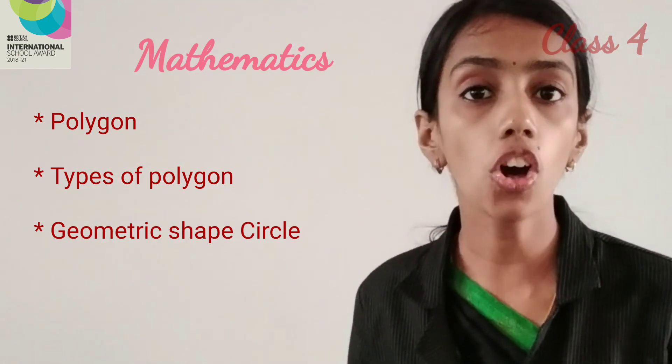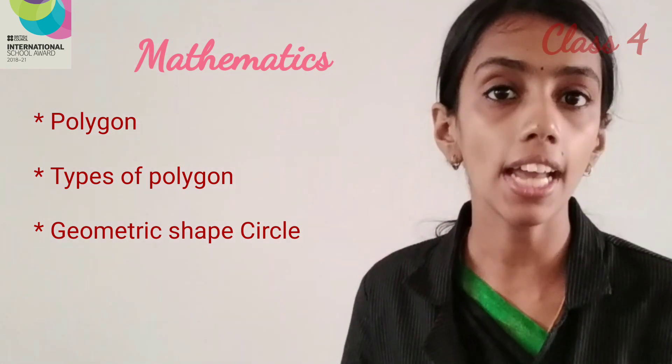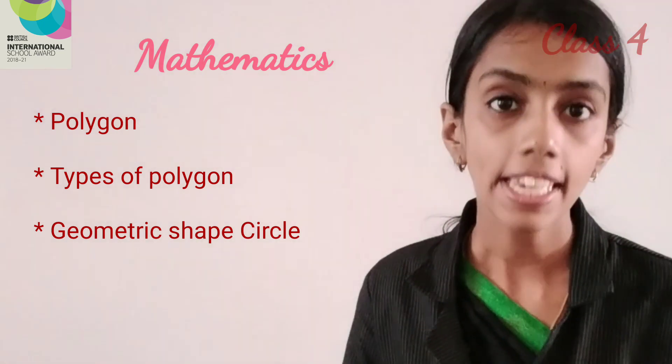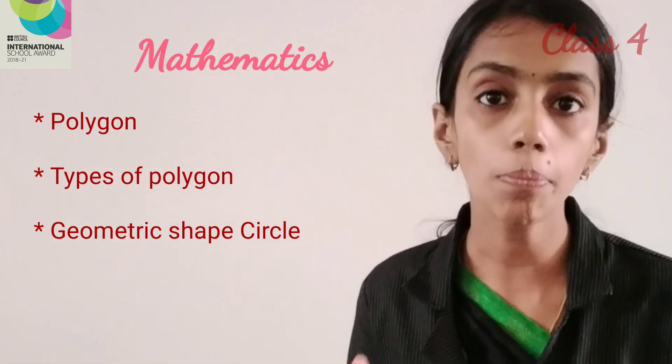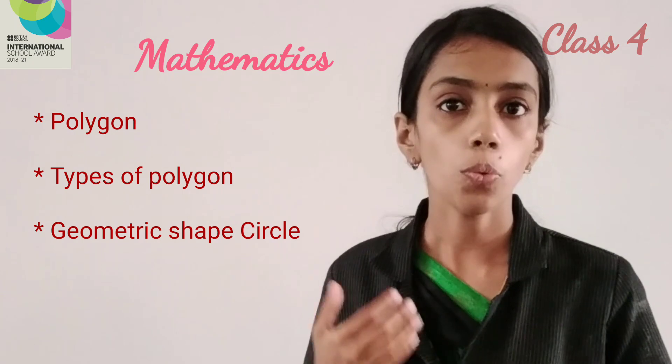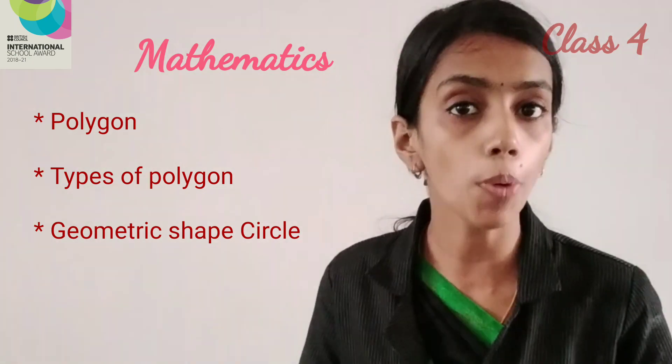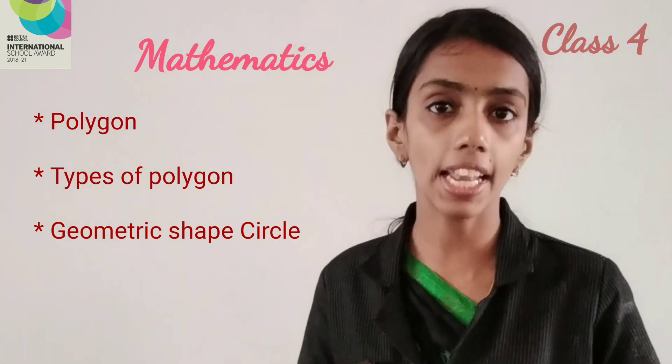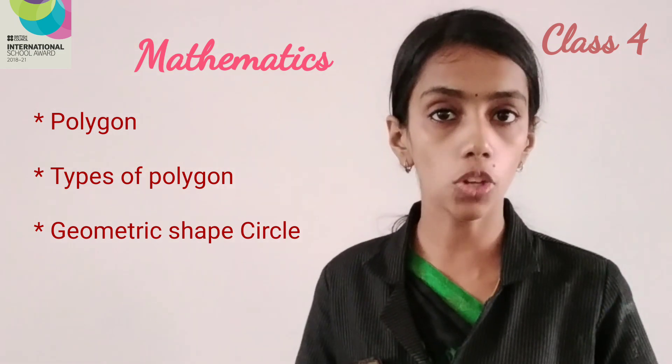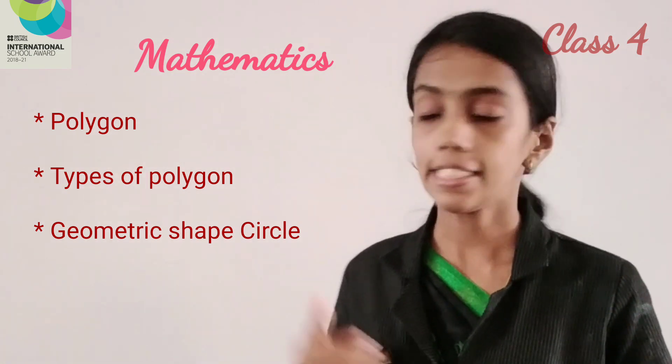When all the sides of a polygon are the same length, it is called a regular polygon. When all the sides of a polygon are different lengths, it is called an irregular polygon.